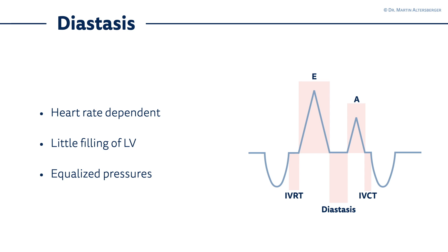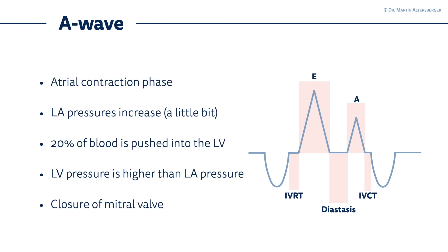After the diastasis, we have another phase — the so-called A-wave. The A-wave is the atrial contraction phase. Now the atrium contributes to the filling of the left ventricle, and in young healthy individuals it's approximately 20 to 30% of the blood which is pushed from the left atrium into the left ventricle. The left atrial pressures increase just a little bit to push the blood in, and at some point the left ventricular pressures are higher than the left atrial pressures — then diastole is finished and the mitral valve closes.